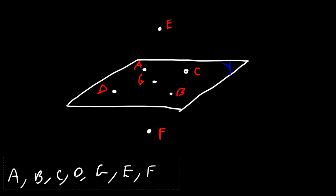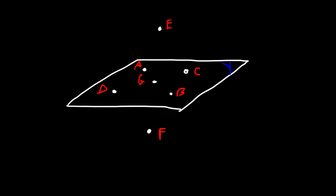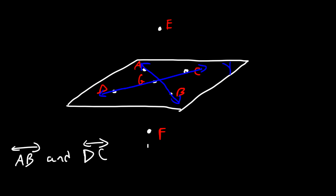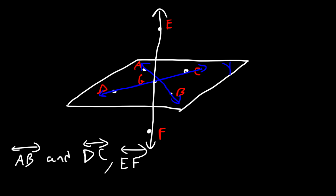Now identify the coplanar lines in this example. We can say that line CD and line AB are coplanar lines because they exist on the same plane. If we add line EF to the mix, then these three are non-coplanar lines.